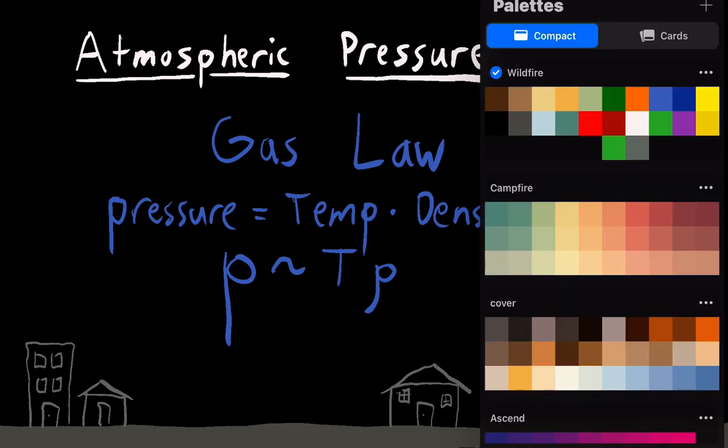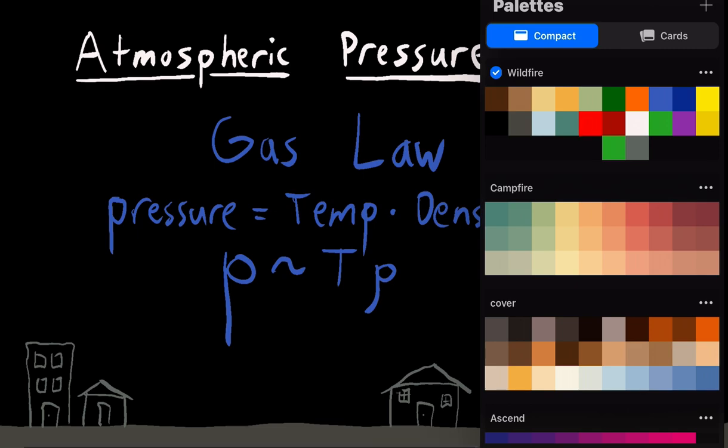So how we're going to think about this is if you were to hold, let's say temperature constant and density went up, that would mean that your pressure went up. Now on the flip side, let's say temperature goes down and density stays the same, that means your pressure has to go down. So this is what we're going to be using throughout this visualization.